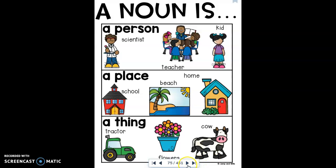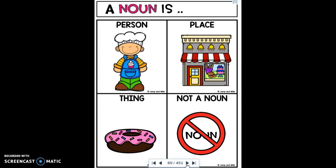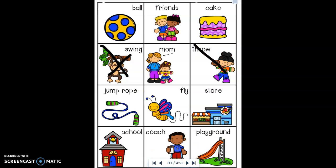Your assignment for today is to do the noun sort. You're going to find your answer sheet, or work mat, and pull it out. At the top of this page it says a noun is a person — and they give us a picture of the chef — a place, and they give us the bakery, or a thing, and there's the donut. We also have a fourth category which is 'not a noun.' This is where we'll glue down pictures that are not nouns. Turn to your next page in your reader's workshop folder.